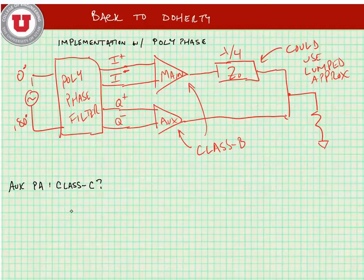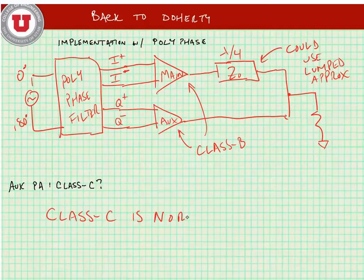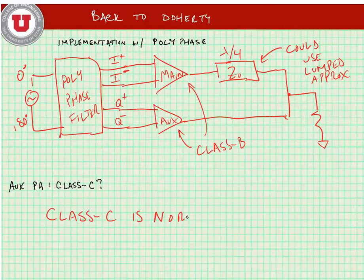What's a class C amplifier? A class C amplifier is a normally off state power amplifier. We're going to bias the PA so that it's normally off and only conducts when the signal at the input is large enough. In the next section of notes, we'll look at what a class C amplifier looks like.